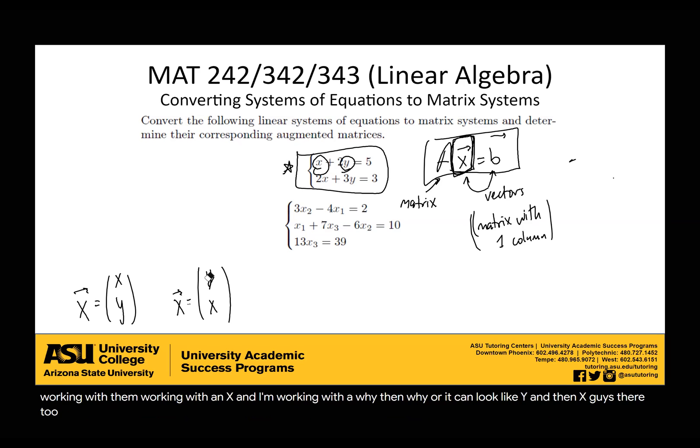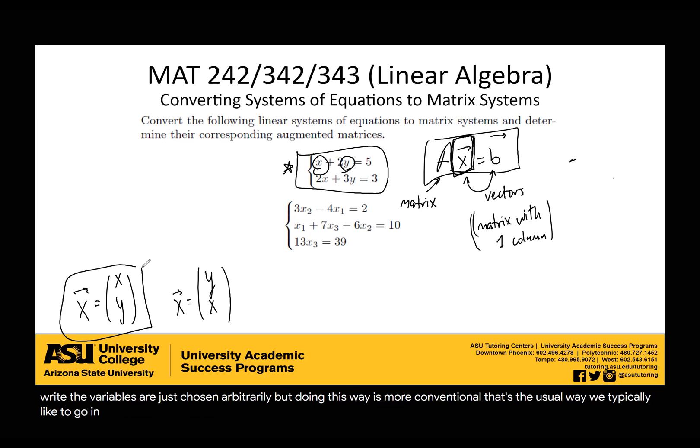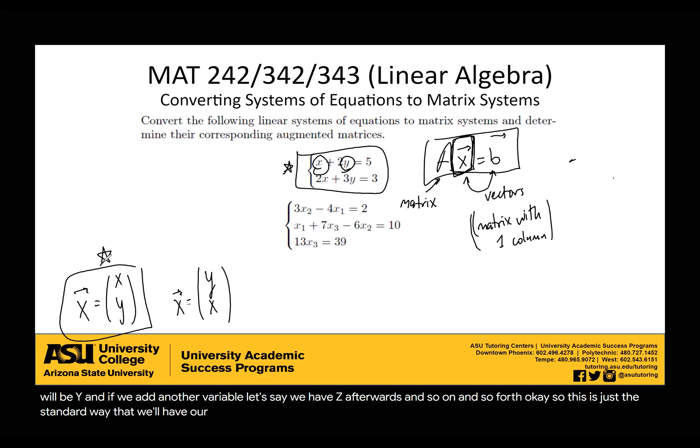So there are two options. Which one do I use? Technically, you're allowed to use either one. It's completely arbitrary. But doing this way is more conventional. That's the usual way. We typically like to go in alphabetical order when we have our variables. So our first variable on top will be x, and then the next one will be y. If we had another variable, we'd have z afterwards, and so on. This is just the standard way that we'll have our variables.